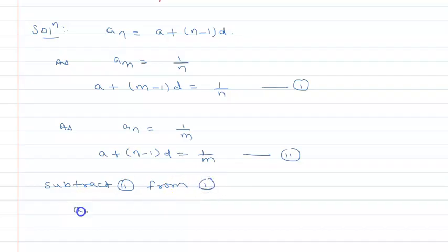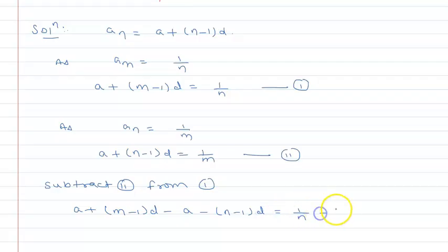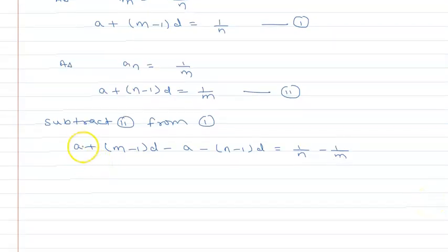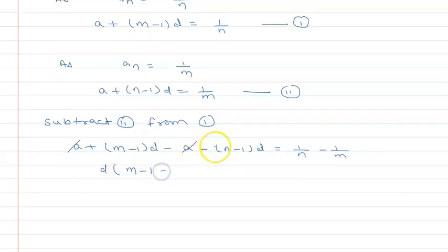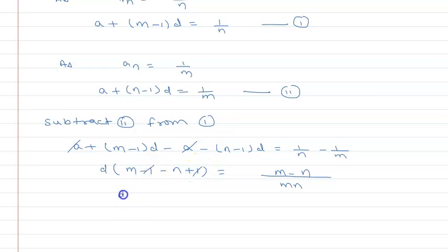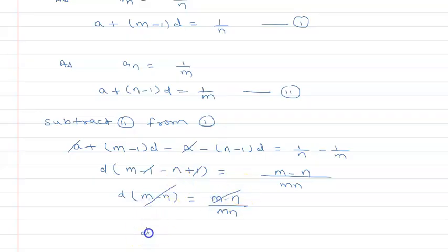Subtracting gives: [a + (m-1)d] minus [a + (n-1)d] = 1/n minus 1/m. The 'a' terms cancel. Taking d as common, we get (m-1) minus (n-1) = m minus n. So (m-n)d = 1/n minus 1/m, which simplifies to (m-n)d = (m-n)/mn. Therefore d = 1/mn.